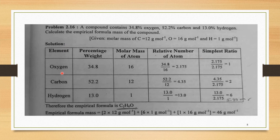Let us look at the determination of empirical formula with a simple numerical. A compound contains 34.8% oxygen, 52.2% carbon, and 13% hydrogen. Calculate the empirical formula mass of the compound. Given data: molar mass of carbon is 12 g/mol, oxygen is 16 g/mol, and hydrogen is 1 g/mol.